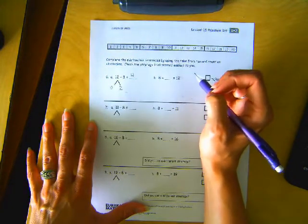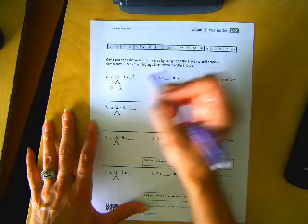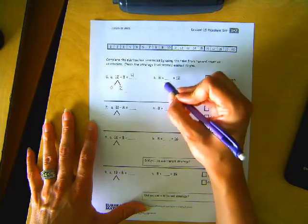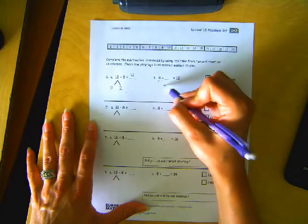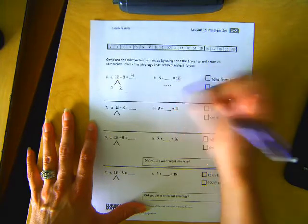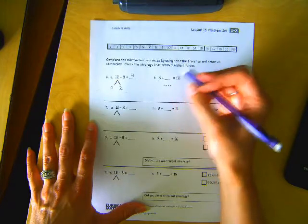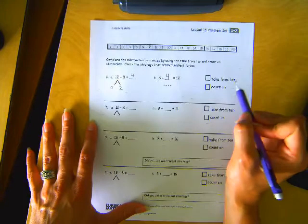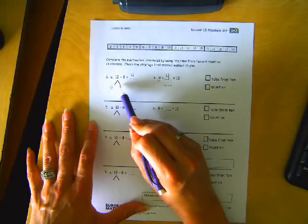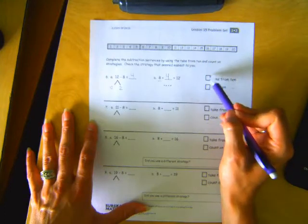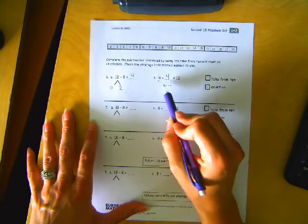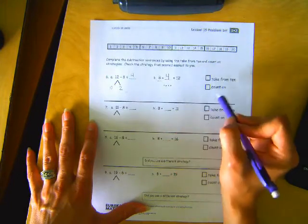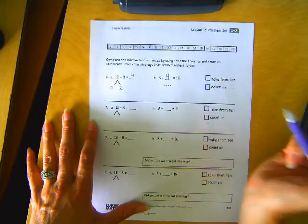Or what if we did the counting on method? What if we went from 8 to 12? So 8 plus what equals 12? So we have 8, 9, 10, 11, 12. That was pretty quick and easy. There was 4 dots. Did you prefer the first take from 10 strategy? If you did, check this one. Or did you like the counting on from 8 up to 12? If you like that one better and that was easiest for you, then you check that one.